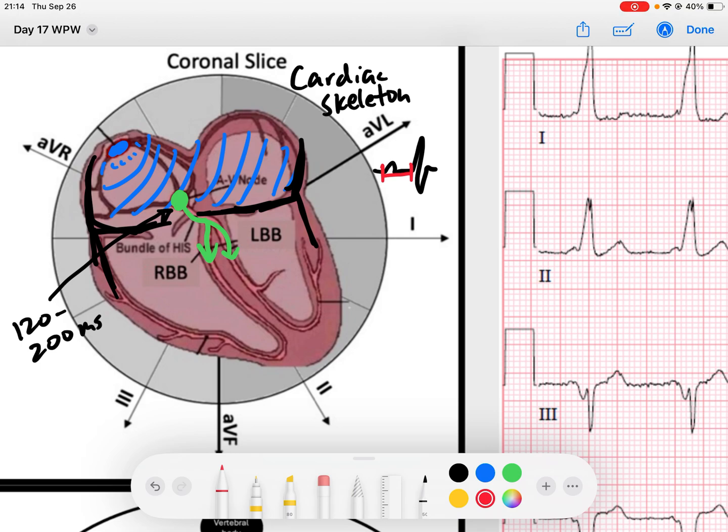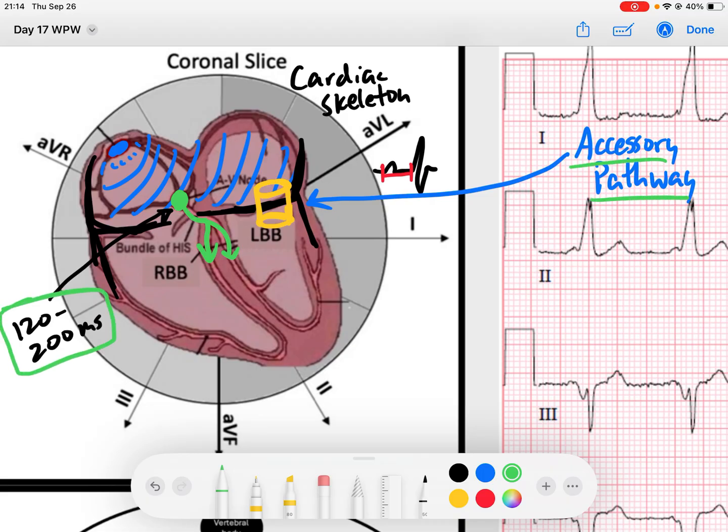So what happens in pre-excitation? In pre-excitation, what you can actually get is an accessory pathway. So you can have a defect in the cardiac skeleton. I'm going to draw it right there. This is called an accessory pathway. And this accessory pathway allows for signals to communicate between the atria and the ventricles, regardless of the cardiac skeleton. And something that's interesting about an accessory pathway is it does not behave like the AV node. Remember we said that the AV node delays signal by 120 to 200 milliseconds. The accessory pathway does not do that.